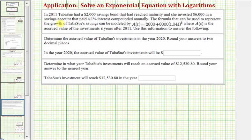In 2011, Tabasoo had a $2,000 savings bond that had reached maturity and she invested $6,000 in a savings account that paid 4.1% interest compounded annually.